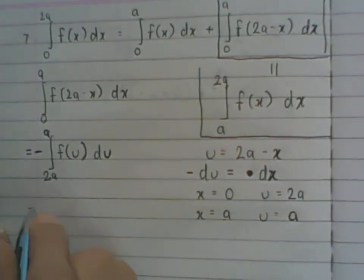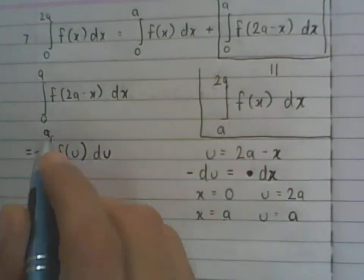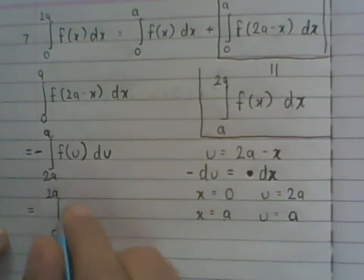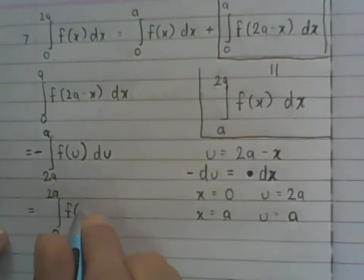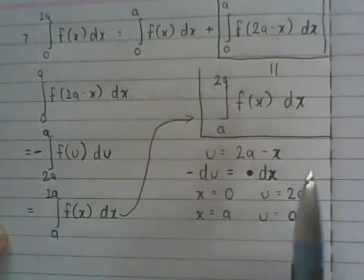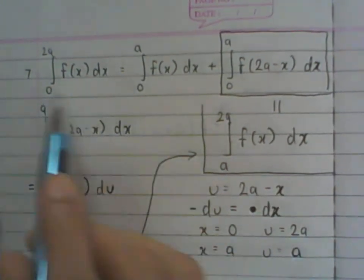So if I rewrite this, the negative takes care of swapping the upper and lower limits, giving us the integral from a to 2a. You can replace u with x, which is the same as what we claimed. Once we have this, from our previous argument, this property holds.